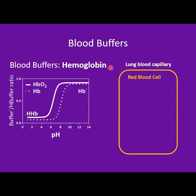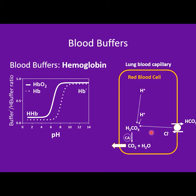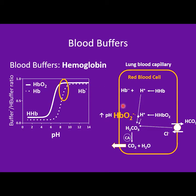In the lung blood capillaries, the lungs eliminate carbon dioxide, so the concentration of carbon dioxide is very low. Carbon dioxide leaves red blood cells and the reaction reverses compared to tissue capillaries. The concentration of protons decreases and pH rises. Both oxyhemoglobin and deoxyhemoglobin will prefer the basic form, so both react to form their basic forms. Because oxygen has more affinity for hemoglobin in the base form, oxygen combines with hemoglobin to form oxyhemoglobin. In this way, the lungs eliminate carbon dioxide and load hemoglobin with oxygen for transport through the body.